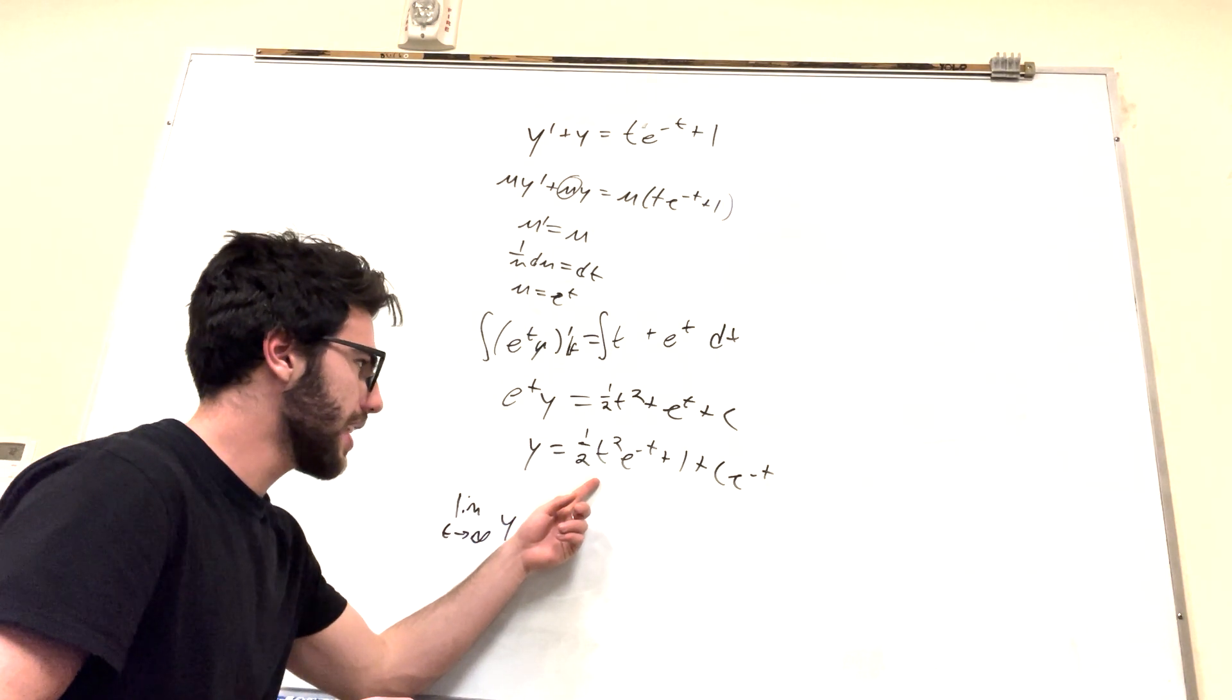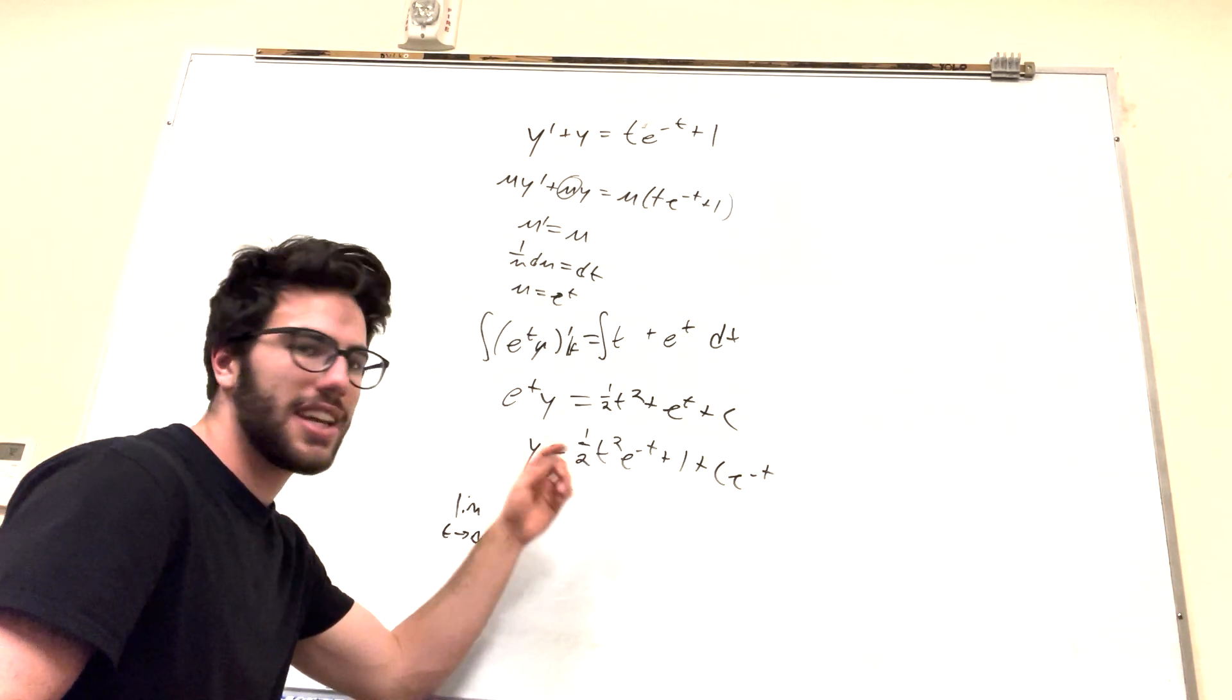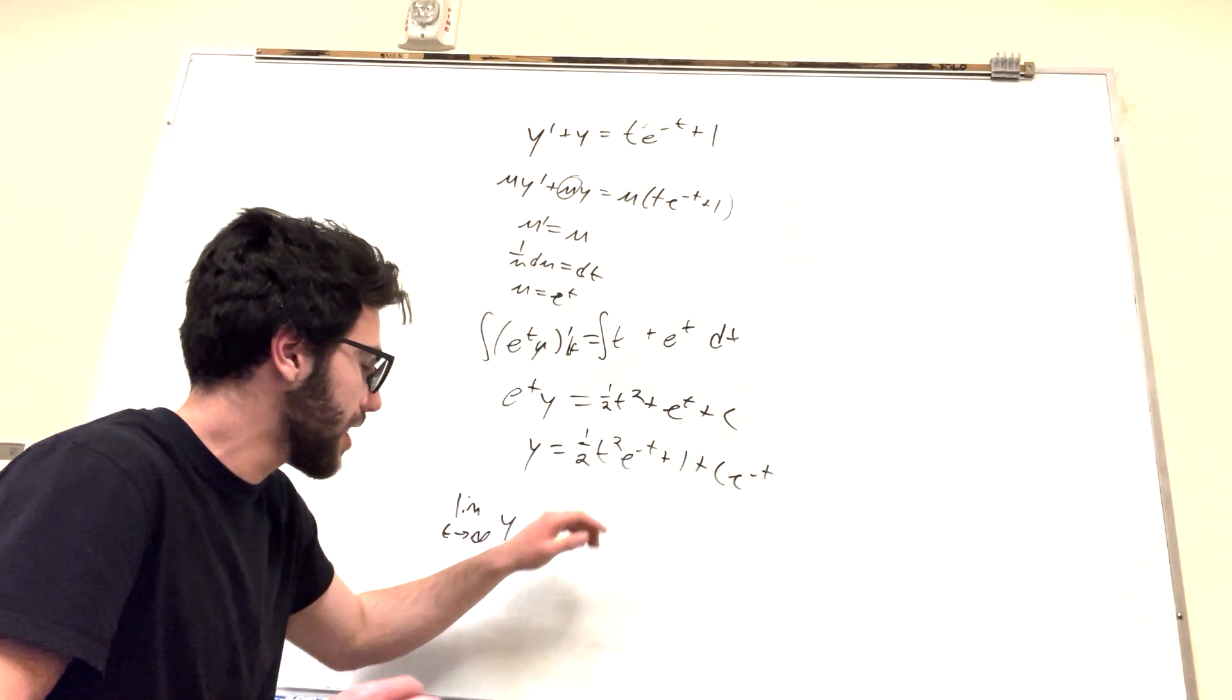This part. Okay, so you'd think that this would go to infinity because it's t squared, but we also have this e to the negative t. And this e to the negative t is gonna go to 0 quicker than this is gonna go to infinity. So this is gonna go to 0.